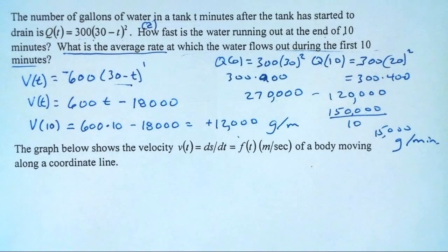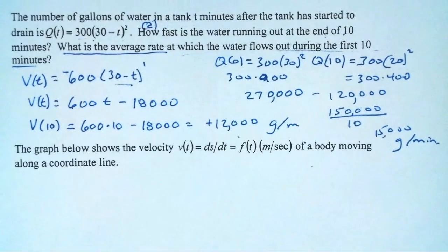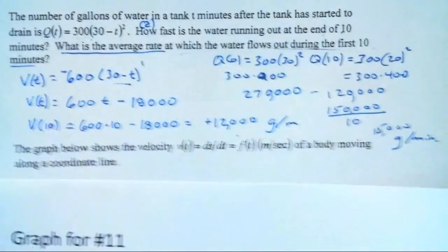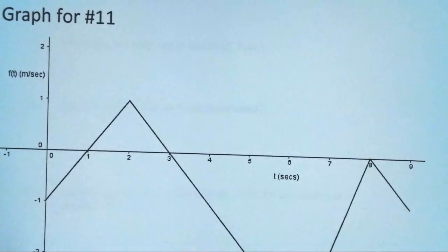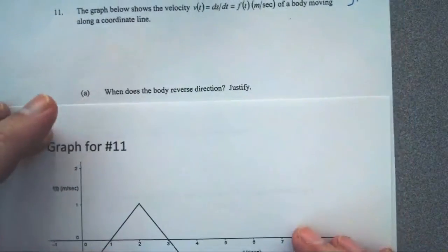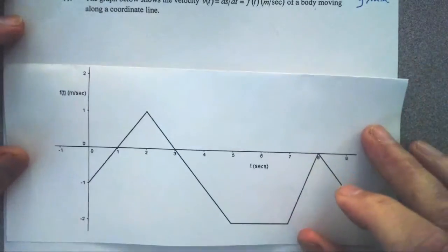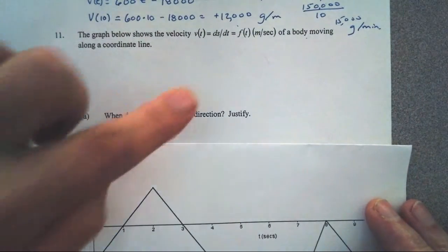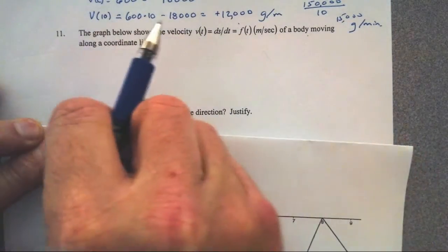Then the graph below — referring to the graph here — is V of T in meters per second. Yes, it is a velocity graph. These are really common AP calc type questions: I'll give you a graph and ask some questions. The graph below is V of T in meters per second, and the body is moving along a coordinate line.